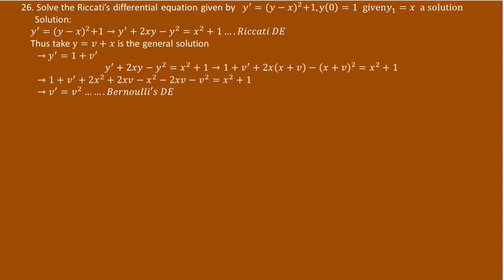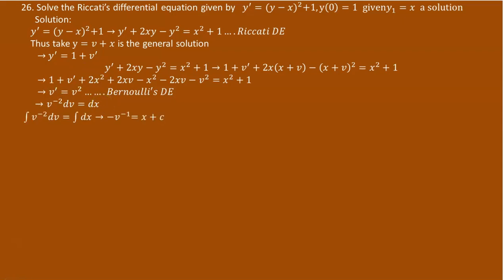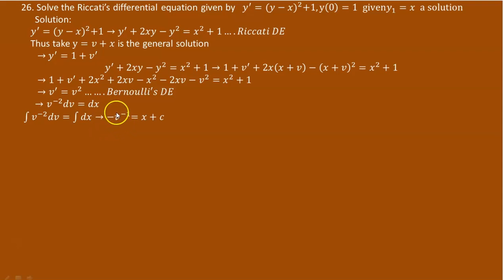How are we going to find the solution for v prime equals v squared? It's simple — we can directly use separation of variables. We know that v prime is dv over dx. Bring v squared to the left as v to the power of minus 2, and bring dx to the right. Then, upon direct integration, we have the integral of v to the power of minus 2 equals the integral of dx. The integral of v to the power of minus 2 is negative v to the power of minus 1 (since minus 2 plus 1 equals minus 1, divided by minus 1). And the integral of dx gives x plus c.